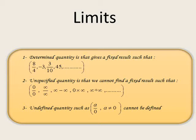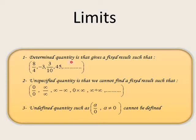Limits. What are the kinds of quantity? Number one: determined quantity. Number two: unspecified quantity. Number three: undefined quantity. A determined quantity gives a fixed result, such as 8 over 4 equals 2, negative 3 is a negative number, 3 over 10 is a decimal number, 45 is a whole number. All these numbers are called determined quantities.